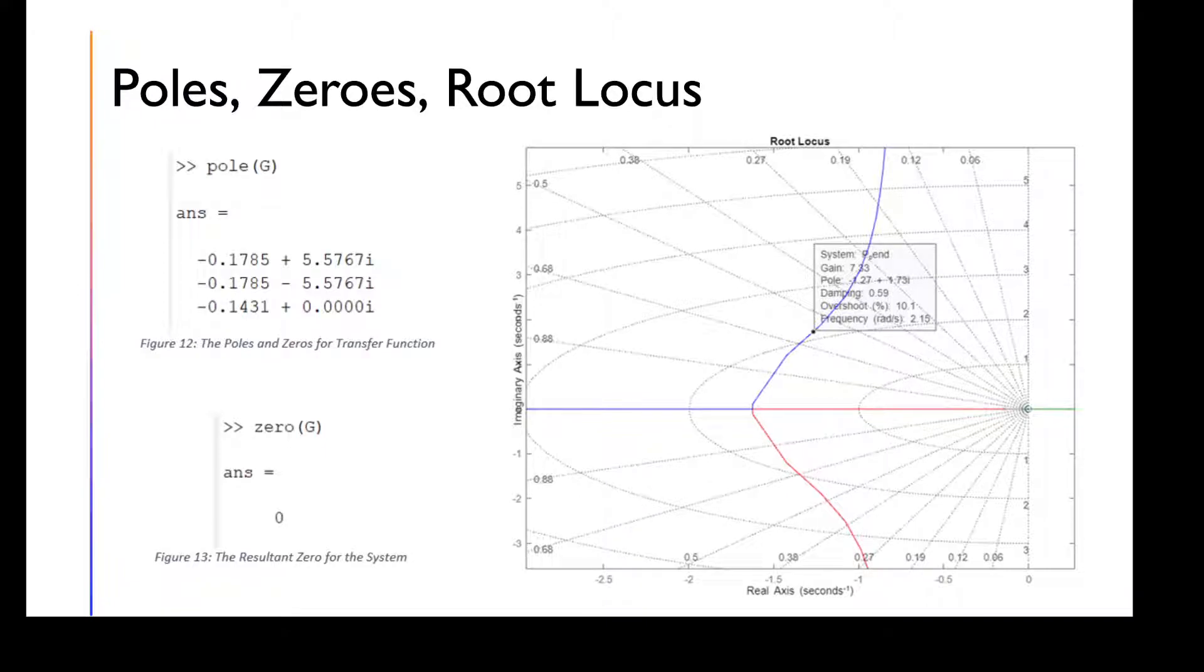Once we had done that, we took it into a root locus to find a 10% overshoot for the transfer function. Over here to the right on the root locus plot, the dot shows that if we want a 10% overshoot, we need to have a gain of 7.33.